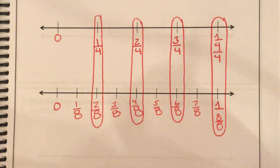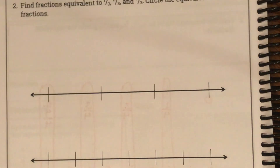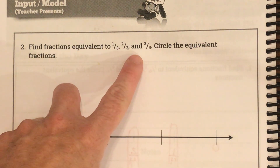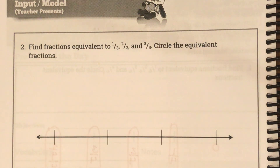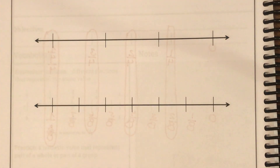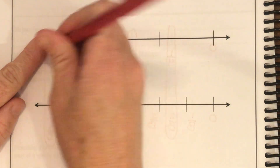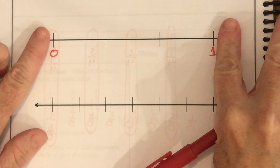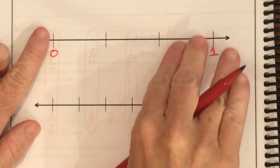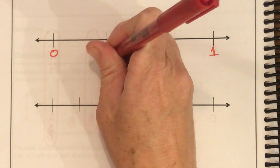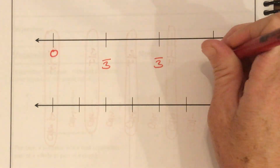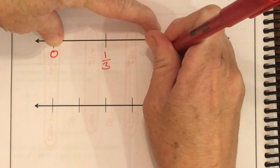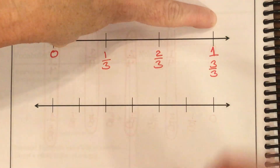Let me show you another one. Here, they want me to find fractions equivalent to one-third, two-thirds, and three-thirds, and circle equivalent fractions. My first number line starts with zero and one unless they're labeled. I look at this one whole and count how many parts it was cut into: one, two, three parts. Since there are three parts, my denominator is going to be a three. Here I have one part, then two parts, then all three parts — that's how I determine the numerator.